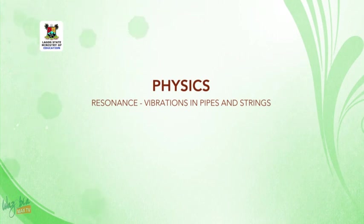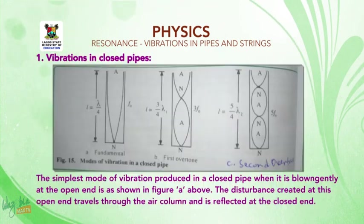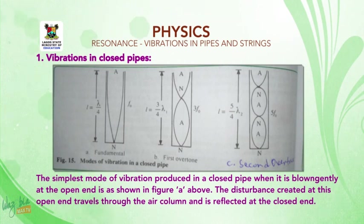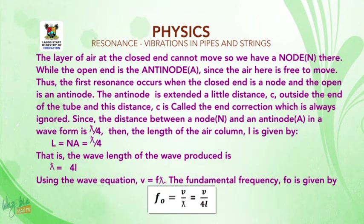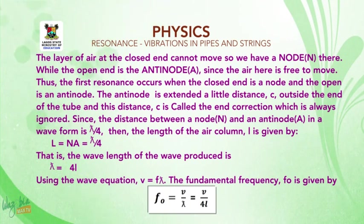Welcome back. Now we are going to look at the modes of vibrations in closed pipes. The simplest mode of vibration produced in a closed pipe when it is blown gently at the open end is as shown in figure A. The disturbance created at the open end travels through the air column and is reflected at the closed end. The layer of air at the closed end cannot move, so we have a node N there. While the open end is the anti-node, since the air there is free to move.